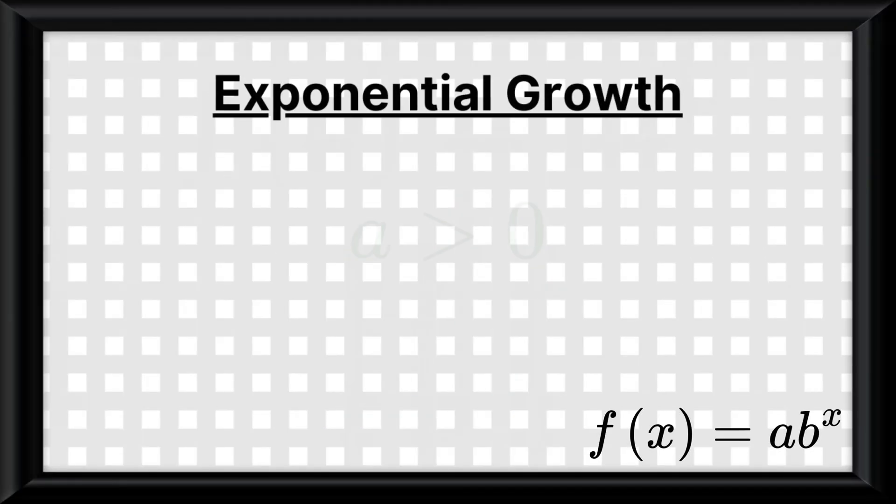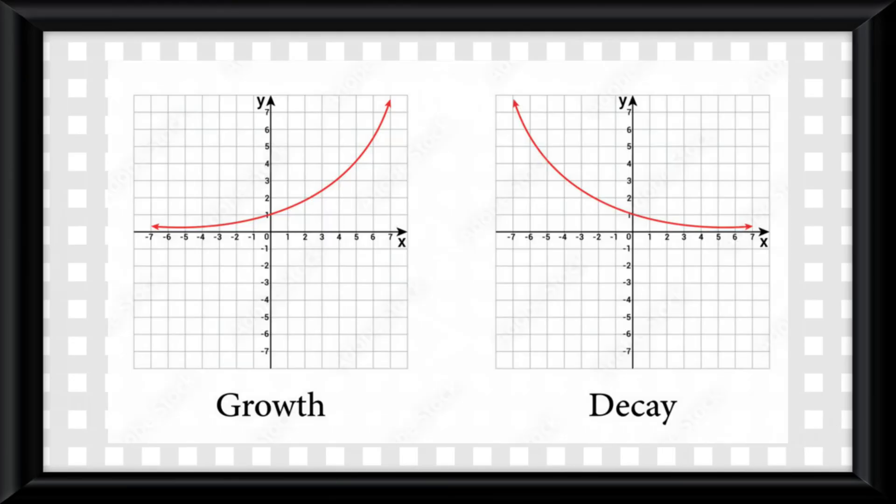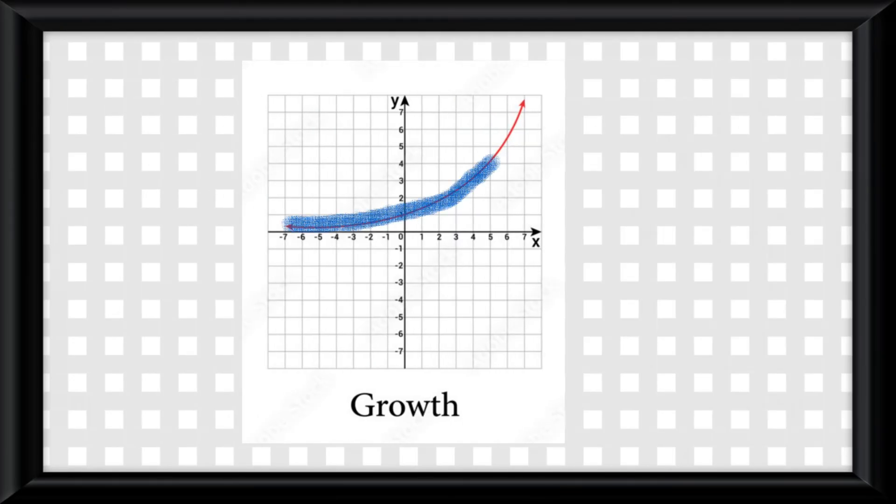An exponential growth happens when a is greater than 0, and b is greater than 1. It looks like this on a graph. You can see it growing, hence it being called a growth.